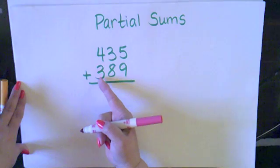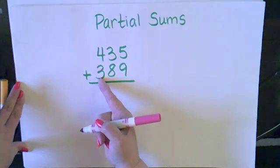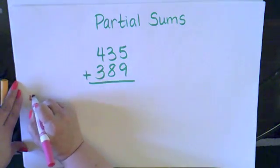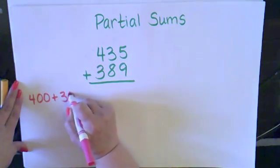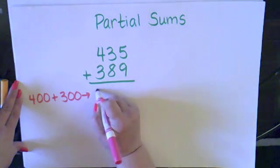I'm going to start with my hundreds place and add up four hundreds plus three hundreds. So I have four hundred plus three hundred and that gives me seven hundred.